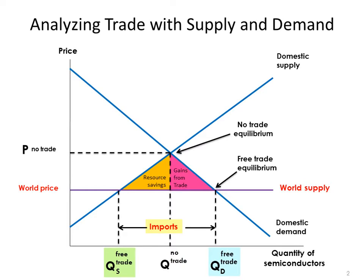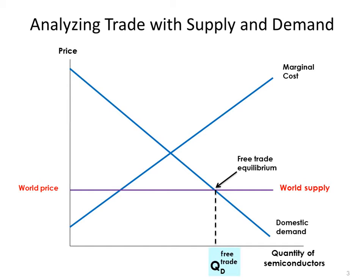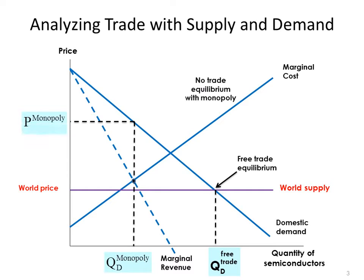Now let's look at what happens if the domestic industry is a monopoly. Here is our basic competition-with-international-trade diagram. Let's now reinterpret this assuming that the domestic industry is a monopoly, so we don't need the old price and quantity. Let's take this domestic supply curve and think about it instead as a marginal cost curve — so the monopolist has the same structure of cost as did the competitive industry. To find the monopolist's profit-maximizing price and quantity, as you may recall from microeconomics, we create a marginal revenue curve. Profit-maximizing price and quantity is found where marginal revenue equals marginal cost. Let's put those on the diagram.